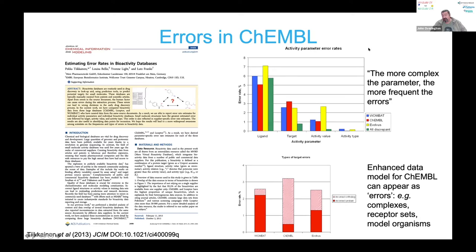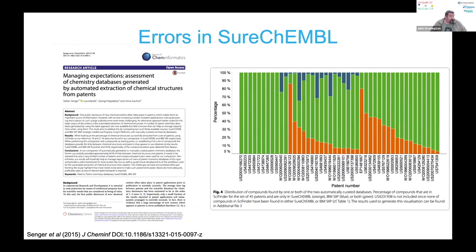Errors in SureChEMBL have a very different error structure, as you can imagine, because it's generated by computer. The advances in text mining and natural language processing are really progressing. The chemistry patent area is one of the real successful exemplars of capturing complex data from large-scale textual information. There are some great commercial and public domain tools to do this sort of text mining.